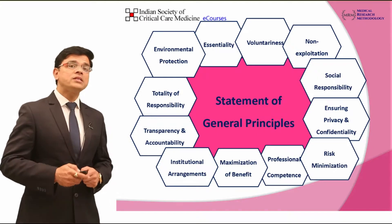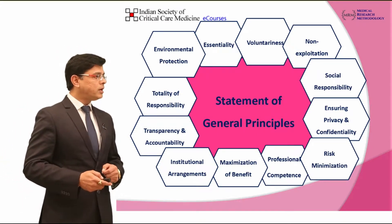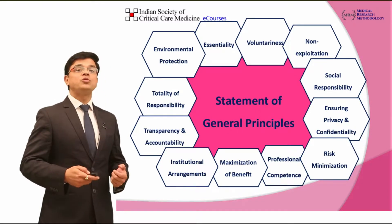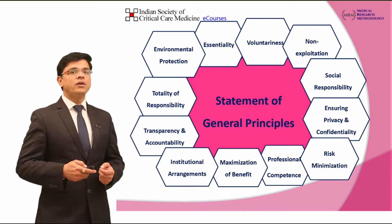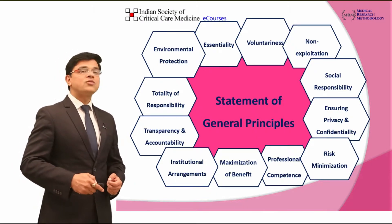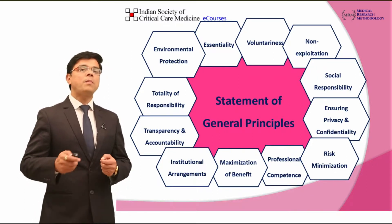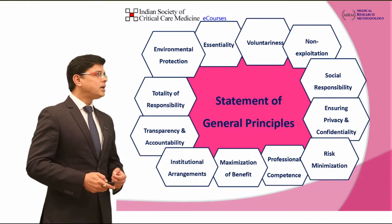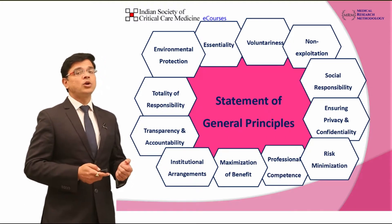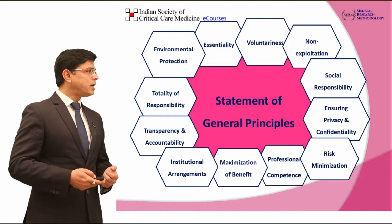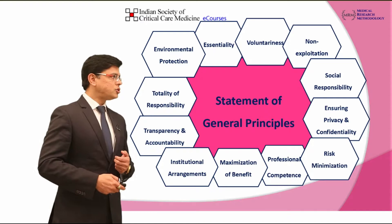Professional competency of the principal investigator and the researcher is also very important. Maximization of benefit to the patient, and institutional arrangements to take care of the smooth running of that research project. Transparency and accountability are also very important for the principal investigator. The totality of responsibilities should be taken by the scientist who is planning this research, and environmental protection is also very important whenever you plan a research.